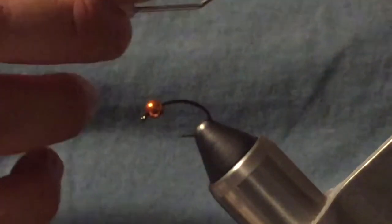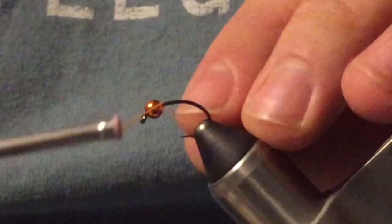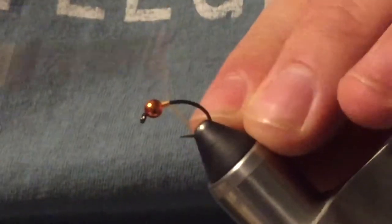Our thread we're using today is hens effect thread in orange. They call it VP 26, their number designation. Start your thread.